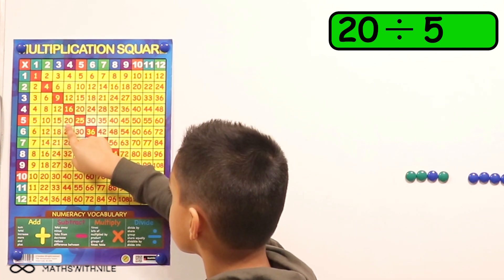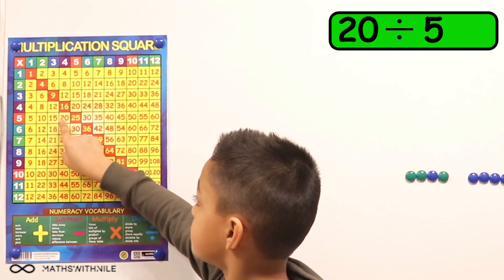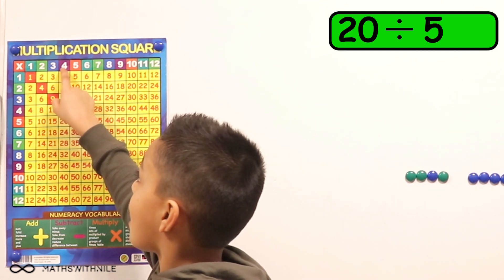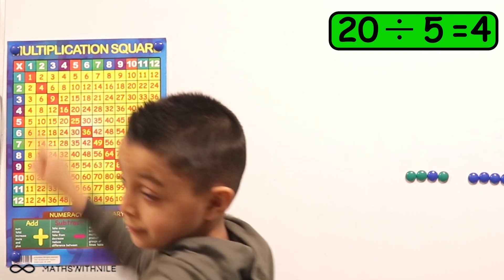So because we're dividing by five, you have to look at the five times table. And then what do you do to find the answer? You have to go up. Good. And the answer's four. Because when I go up, we get to four. Very good.